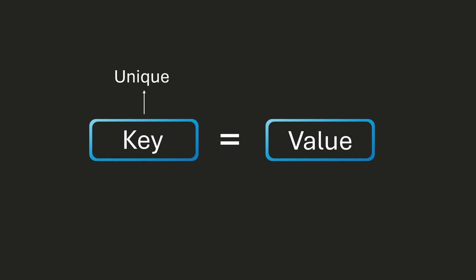One important thing to remember is that the key must be unique. This does not apply to the value, so we can have multiple values which are the same in a dictionary. However, every key has to be unique since every key should exist only once in the dictionary, and every value is associated with a key.